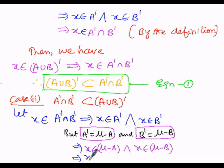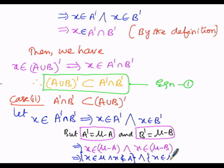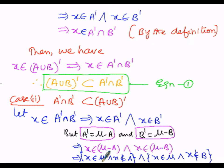We can write it as: x belongs to μ and x does not belong to A (the first condition), and x belongs to μ and x does not belong to B (the second condition). Since 'x belongs to μ' and 'and' are common in both conditions, I want to take 'x belongs to μ and' as common in the next logical step.